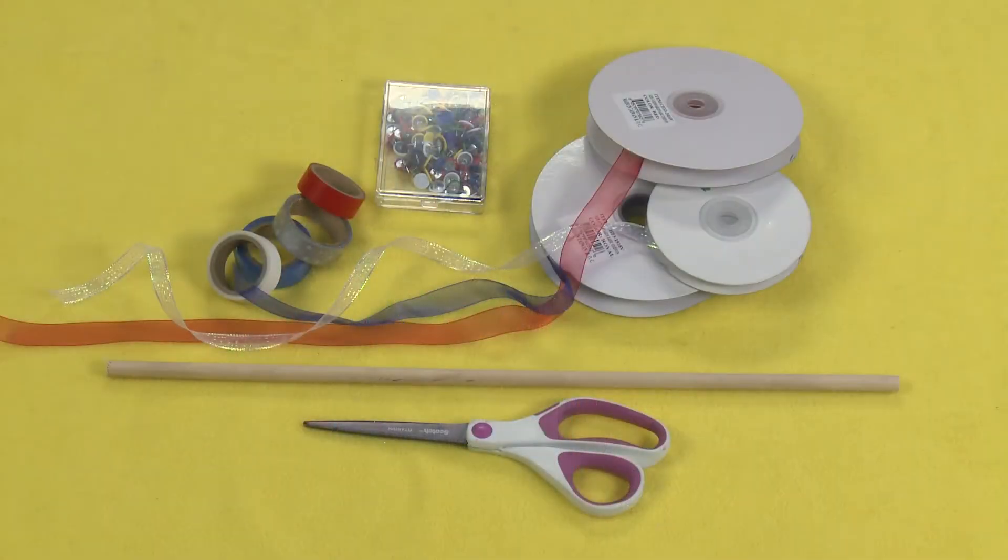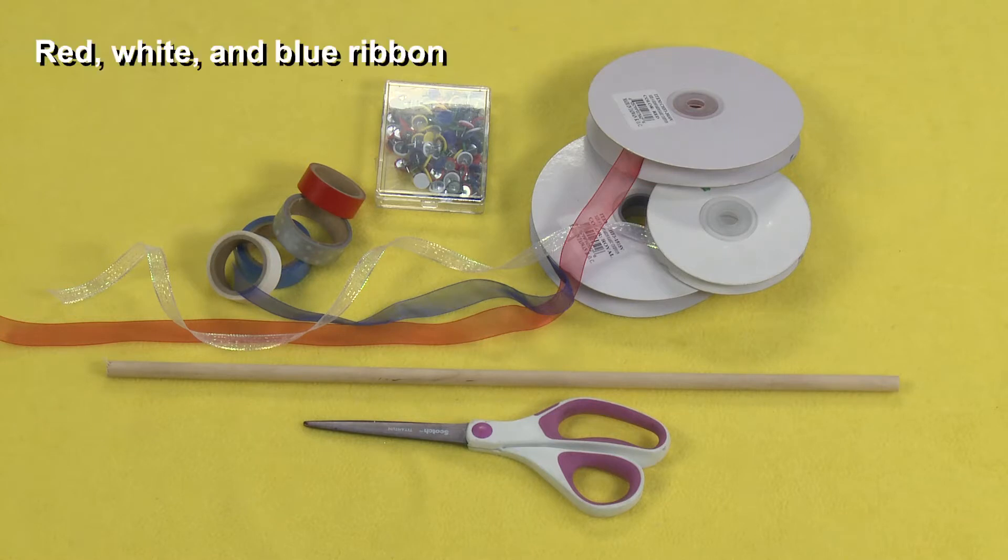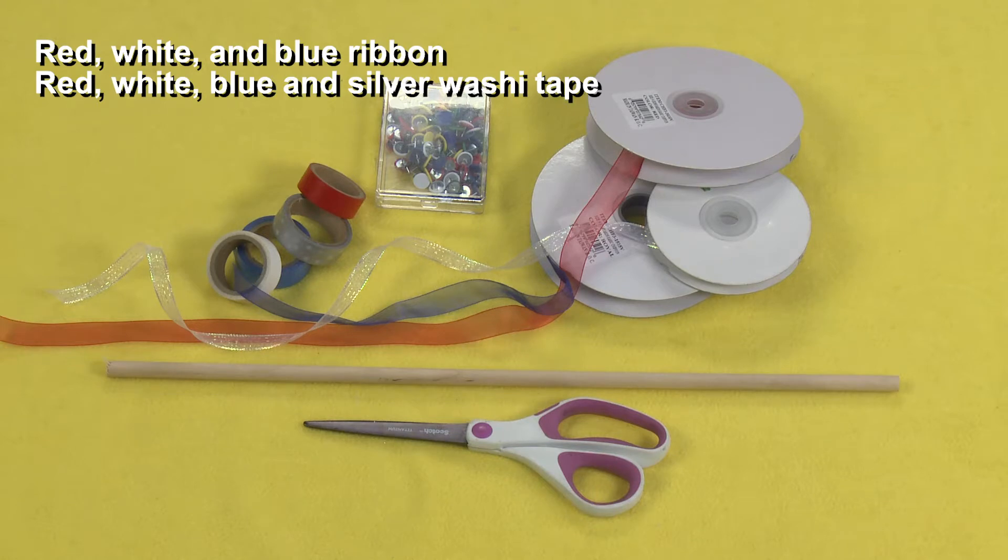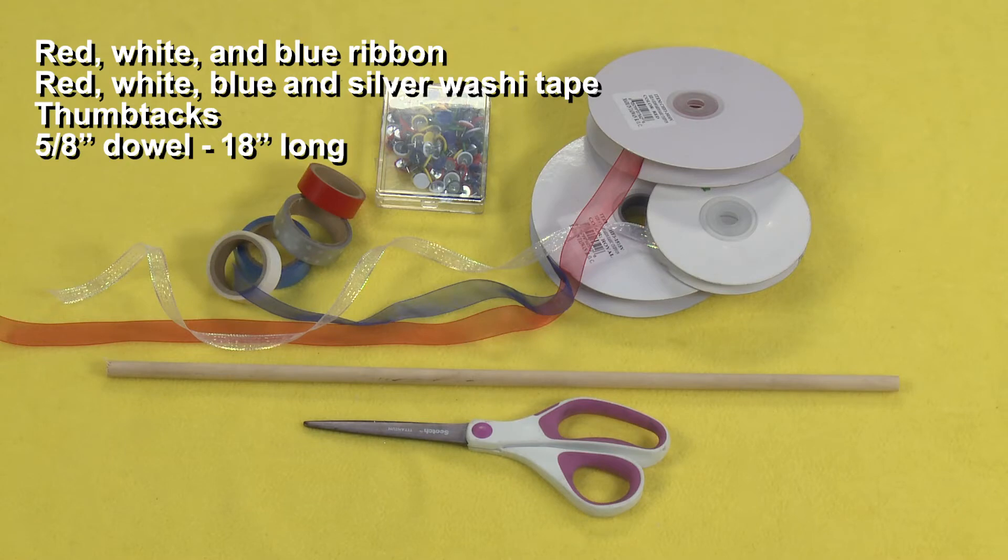For this project you will need ribbon in red, white, and blue, washi tape in red, white, and blue, and silver, thumbtacks, and a 5 eighths inch dowel that is 18 inches long. You'll also need scissors.